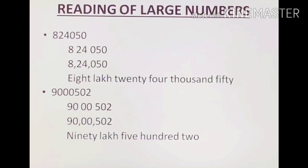Example two: 9,00,00,502. We separate it with commas as shown, and we read it as ninety crore five hundred and two. So students, in this session we have learned how to read large numbers. In the next session we'll be learning how to write large numbers. Have a nice day.